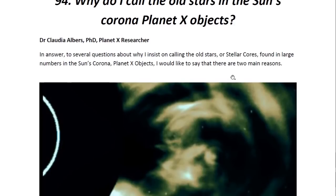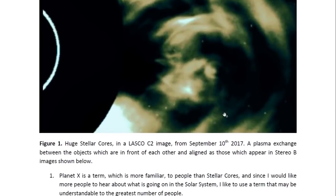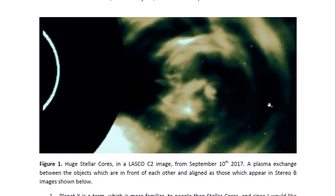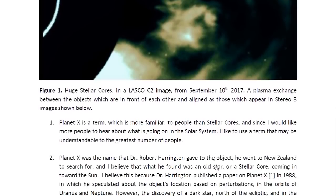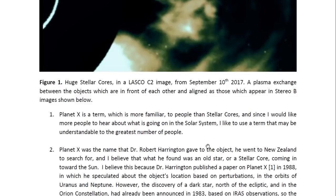There are two main reasons. We start here with an image of a huge stellar core with at least one other one in front of it, aligned in this way. We also see these stellar cores aligned in a similar way in the Stereo B images which I will show further down. Planet X is a term which is more familiar to people than stellar cores, and since I'd like more people to hear about what is going on in the solar system, I like to use a term that may be understandable to the greatest number of people.